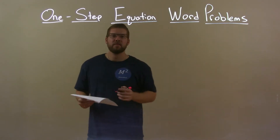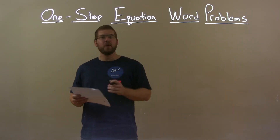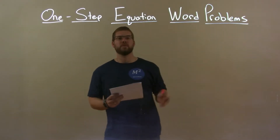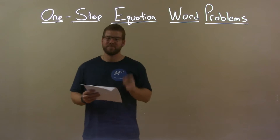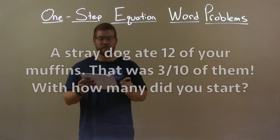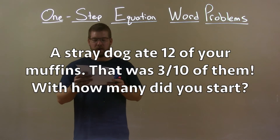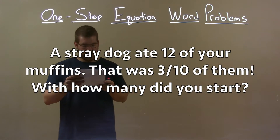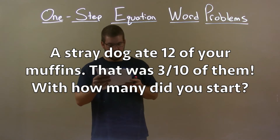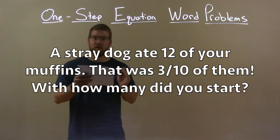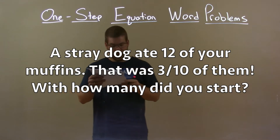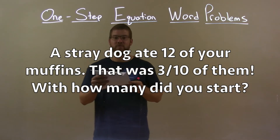Hi, I'm Sean Gannon and this is Minute Math. Today we're learning about one-step equation word problems. Here's the word problem: a stray dog ate 12 of your muffins. That was three tenths of them all. With how many did you start?